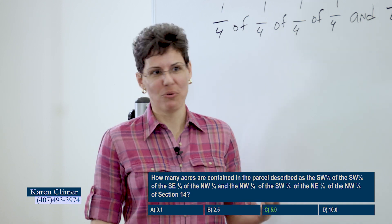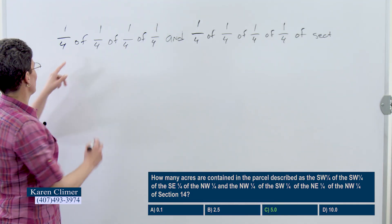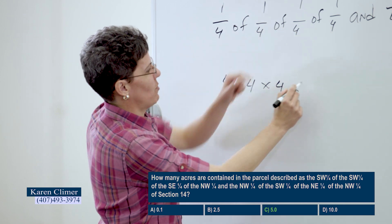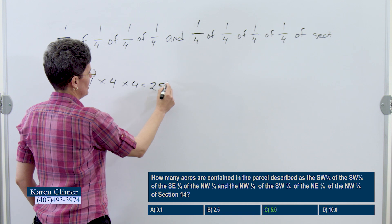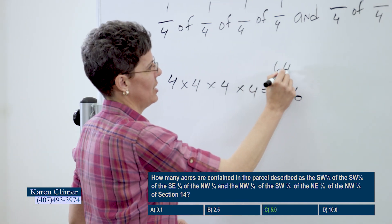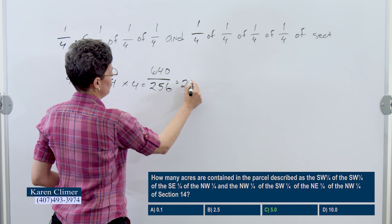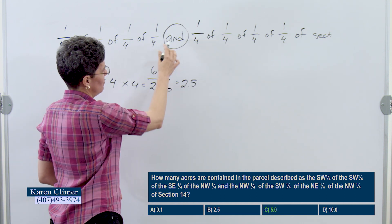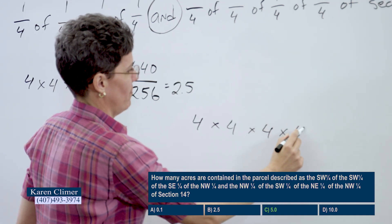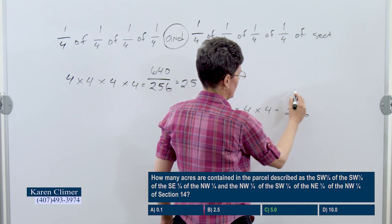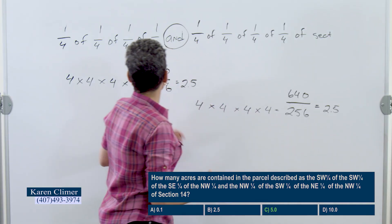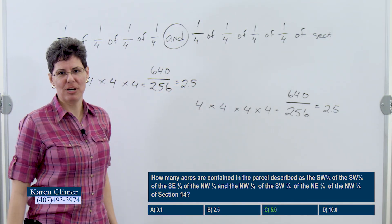Another way you can do it is the forward method. We go forward: 4 times 4 times 4 times 4 times 4. Put that in your calculator and you get 256. There are 640 acres in a section, so 640 divided by 256 gives you 2.5. Then we have to do it again when you see the word 'and.' So 4 times 4 times 4 times 4 times 4 is 256 again. 640 divided by 256 gives you 2.5. This half is 2.5, this half is 2.5 — add them up and you get 5.